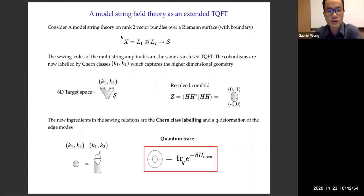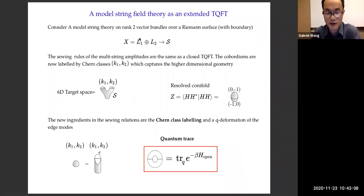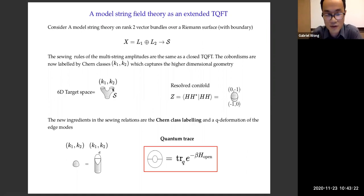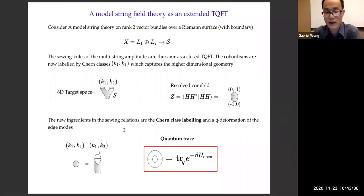Let me say what the A-model TQFT is. We consider string theory not on a general target space, but on a sum of line bundles over a Riemann surface. Remarkably, the sewing rules for the multi-string amplitudes on this kind of target space are exactly the same as those of a closed TQFT. The cobordisms are drawn like a 2D base manifold S, but now we have Chern classes K1, K2 that capture the higher-dimensional geometry. This picture is a six-dimensional target space. The resolved conifold we discussed earlier is just this sphere with these labels. All the sewing relations have Chern class labels like the E-brane, and there's a quantum deformation of the edge mode, so the annulus is now some kind of quantum trace — that will be important later.